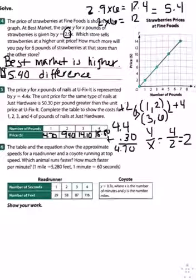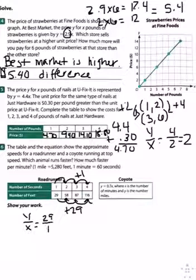Number 6. The table and the equation shows the approximate speeds for a roadrunner and a coyote running at top speed. Which animal runs faster? How much faster per minute? So 1 to 2 to 3 to 4 is going up 1. 29 to 58 to 87 to 116 is going up by 29. Y over X is going to give us 29 over 1, which is 29 feet per second.